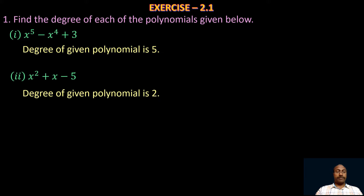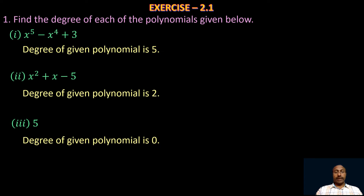Take the third one: 5 (a constant). In the previous part we discussed that a constant polynomial is a polynomial of degree 0, because 5 can be expressed as 5·x⁰ and the power of the variable is 0. So the degree of any constant is 0, and the degree of this given polynomial is also 0.